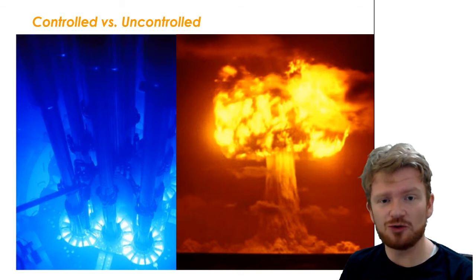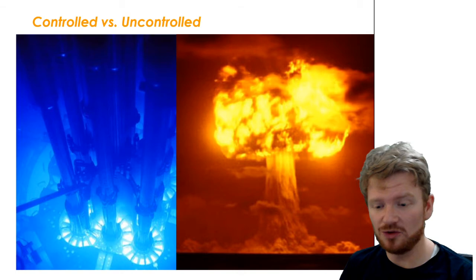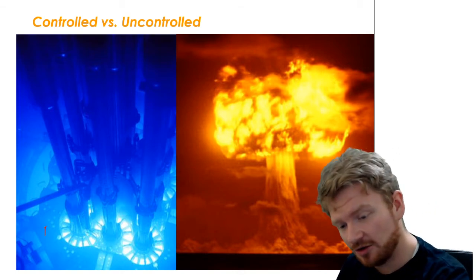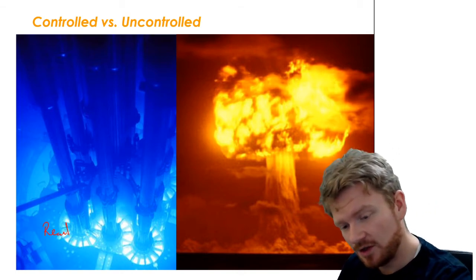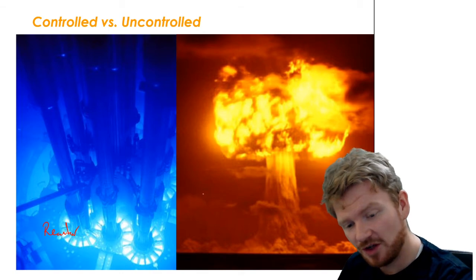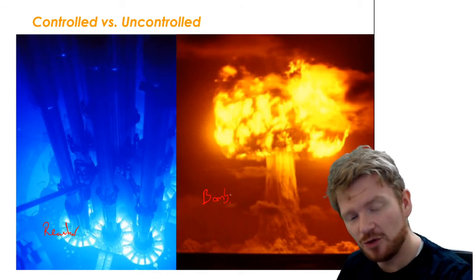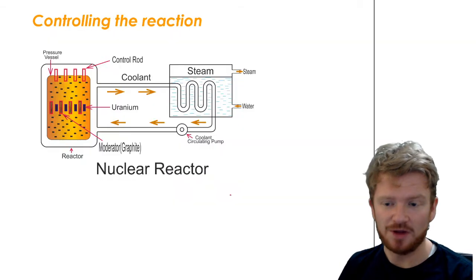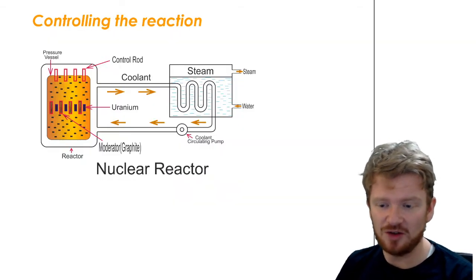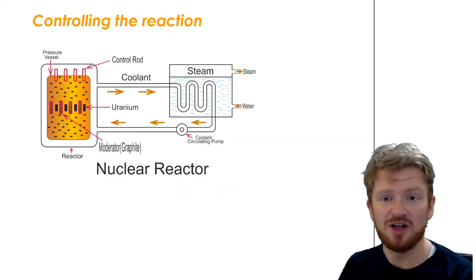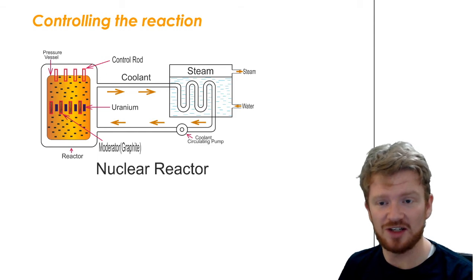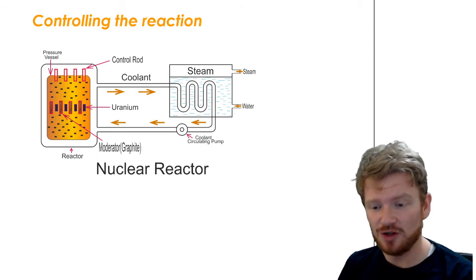I touched on earlier the idea of controlled versus uncontrolled nuclear fission. If we have controlled, then we get a nuclear reactor, which can be used for power. If it's uncontrolled, then we get a bomb. So it's important that we're able to do so. So what we have to do is to have a device that can control and steady our rate of nuclear fission.